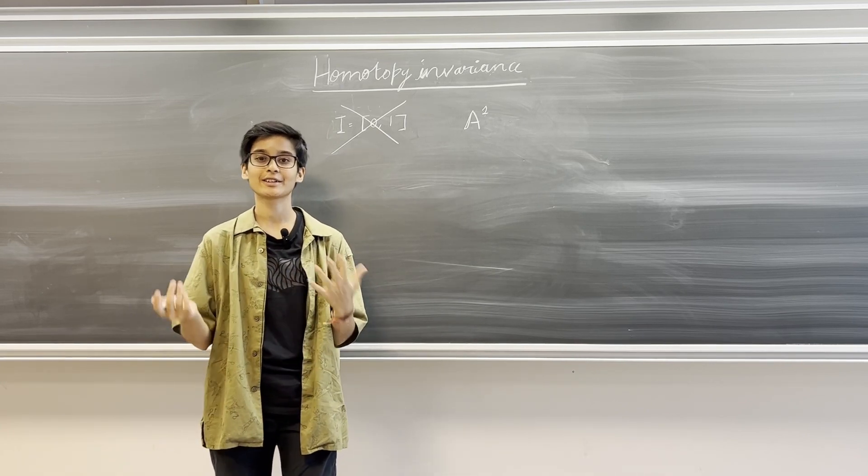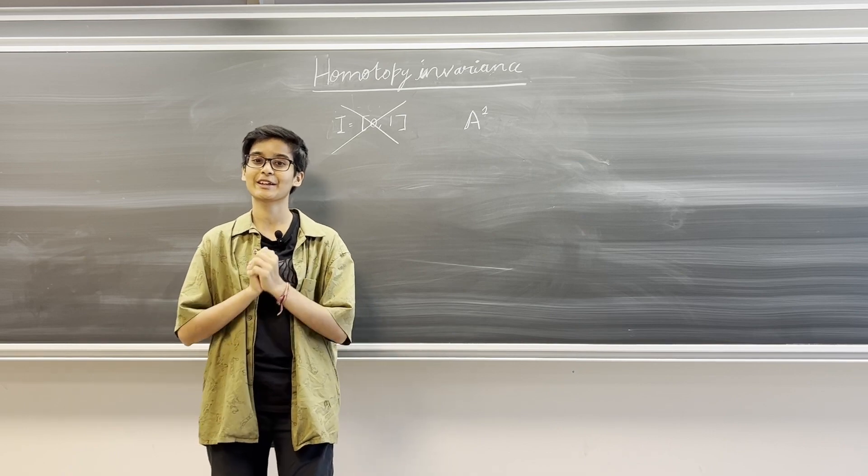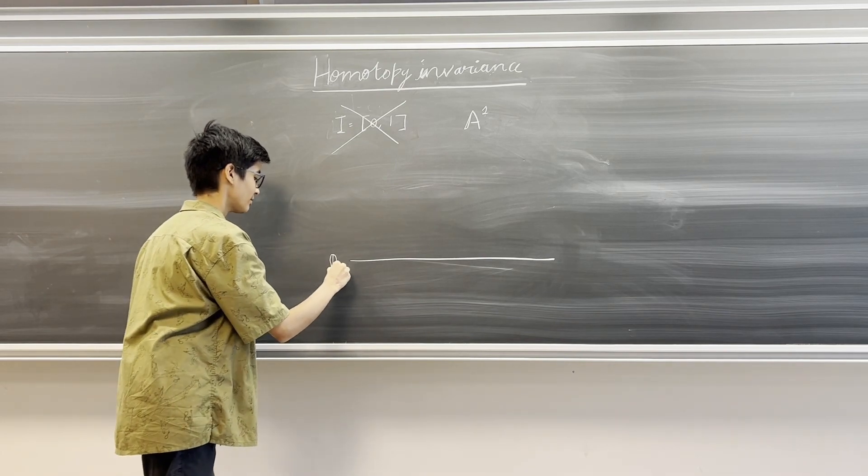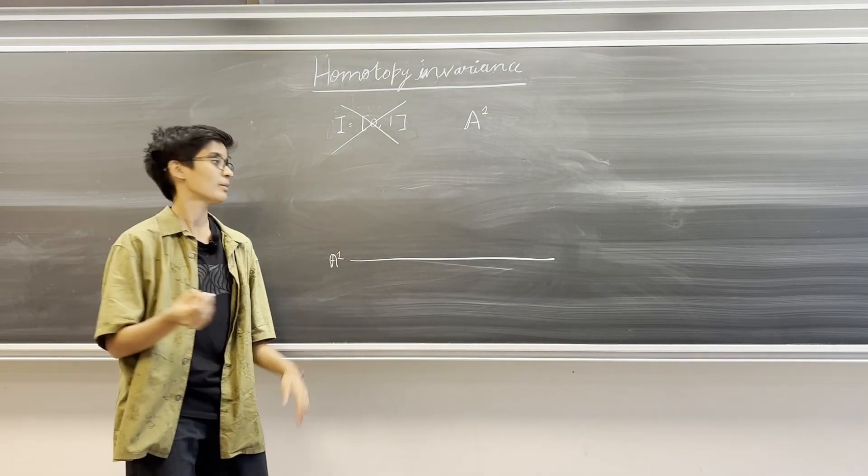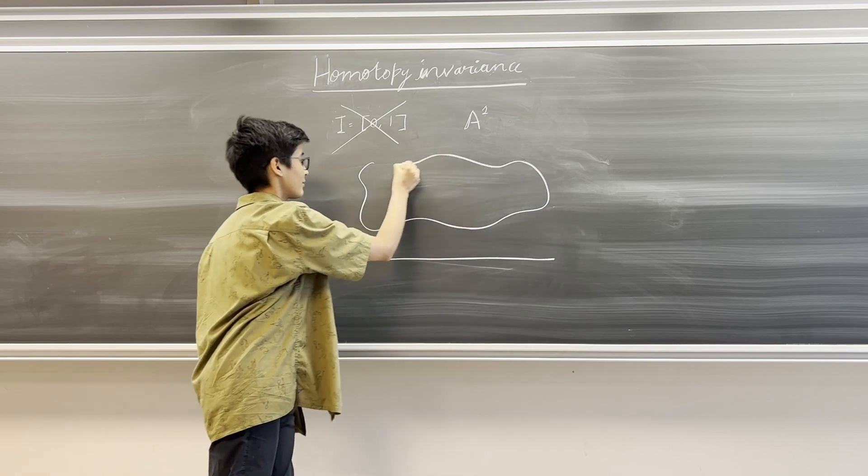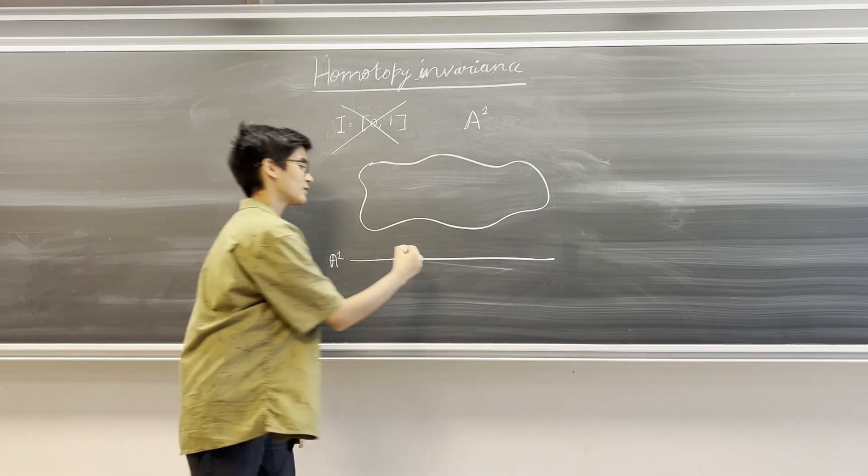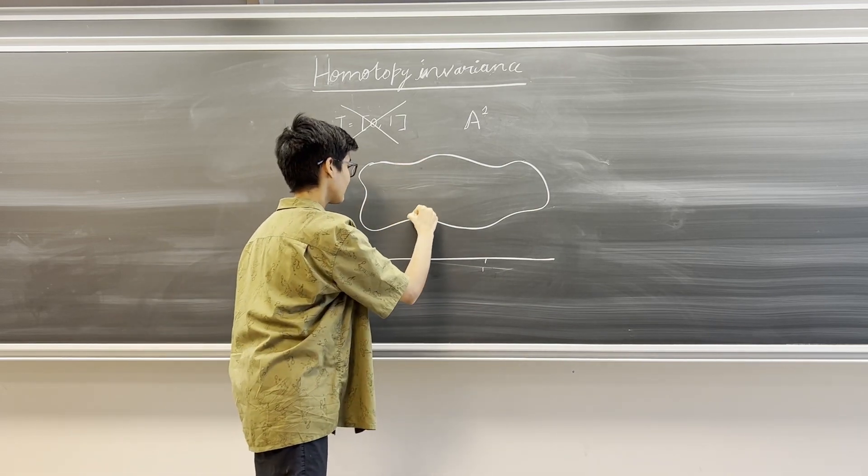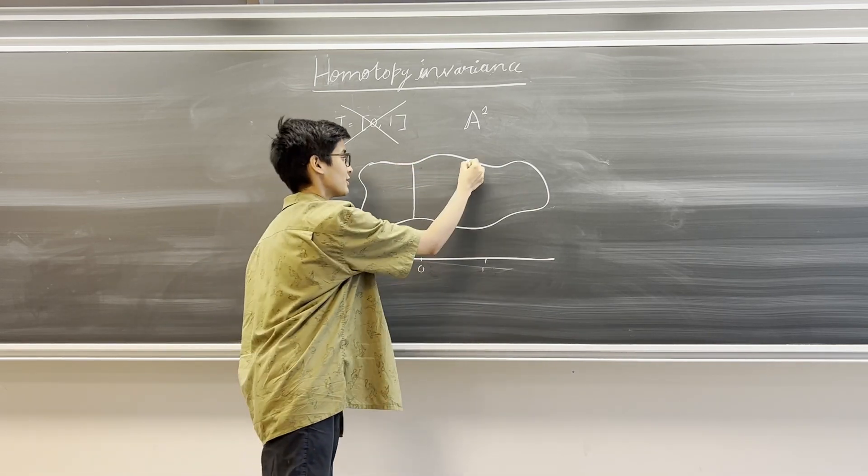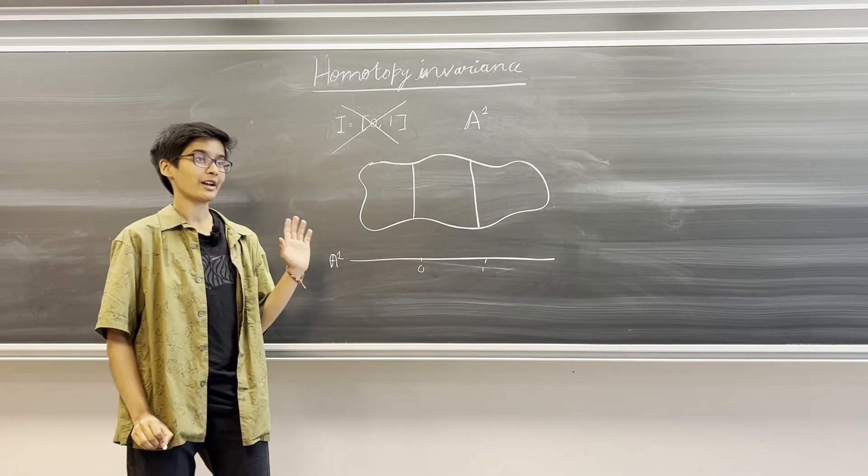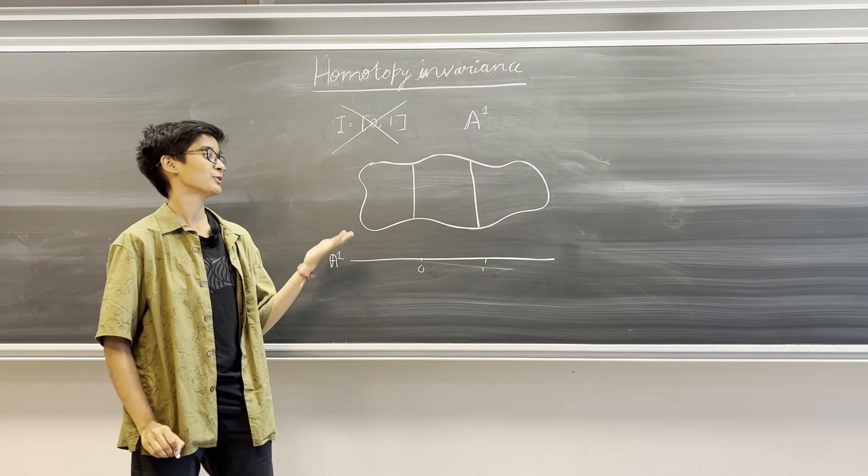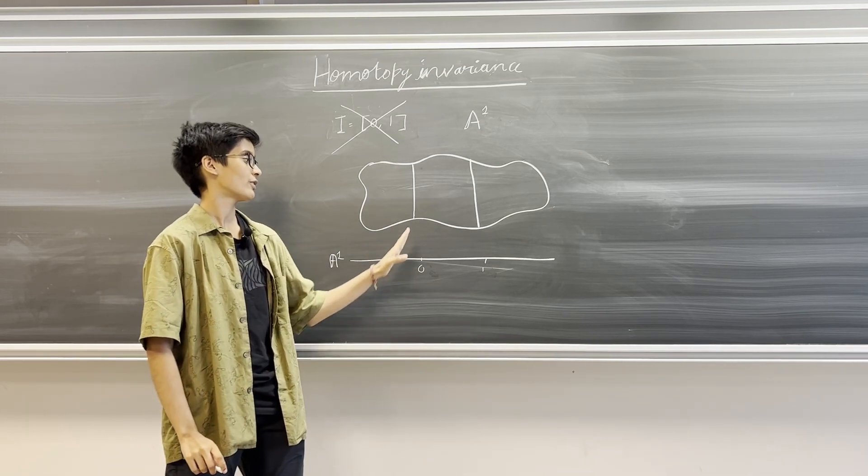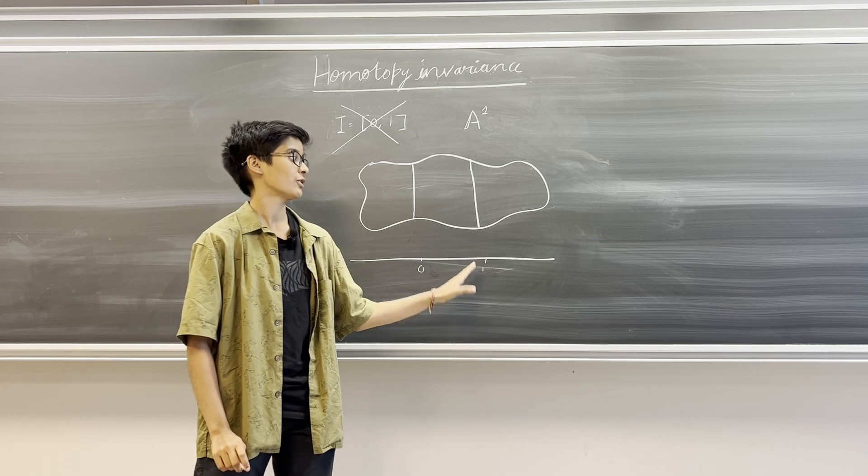We say that this invariant is A1 homotopy invariant if given the affine line and given a family over this affine line and given the points 0 and 1 in the affine line and their fibers in the family, this invariant is A1 homotopy invariant if it takes the same values on the fibers of 0 as it does on the fibers over 1.